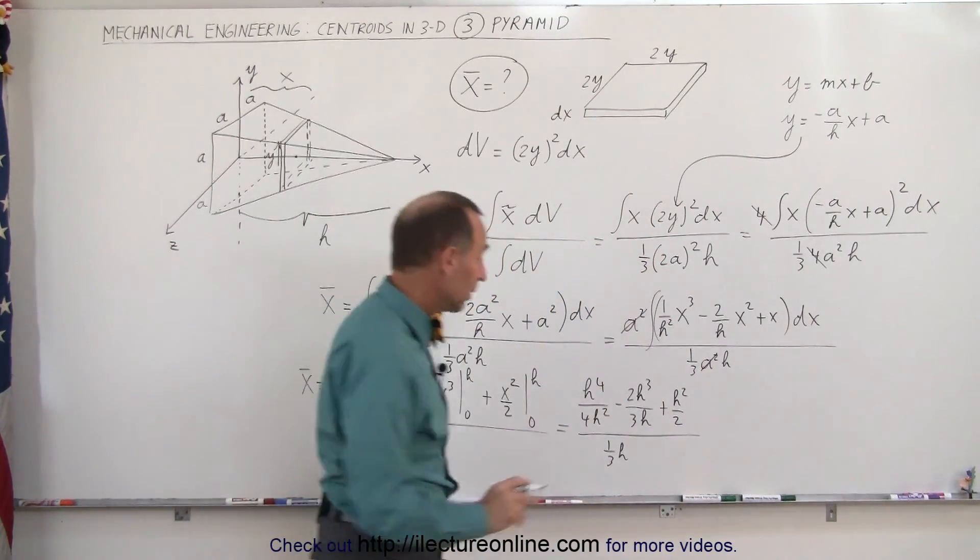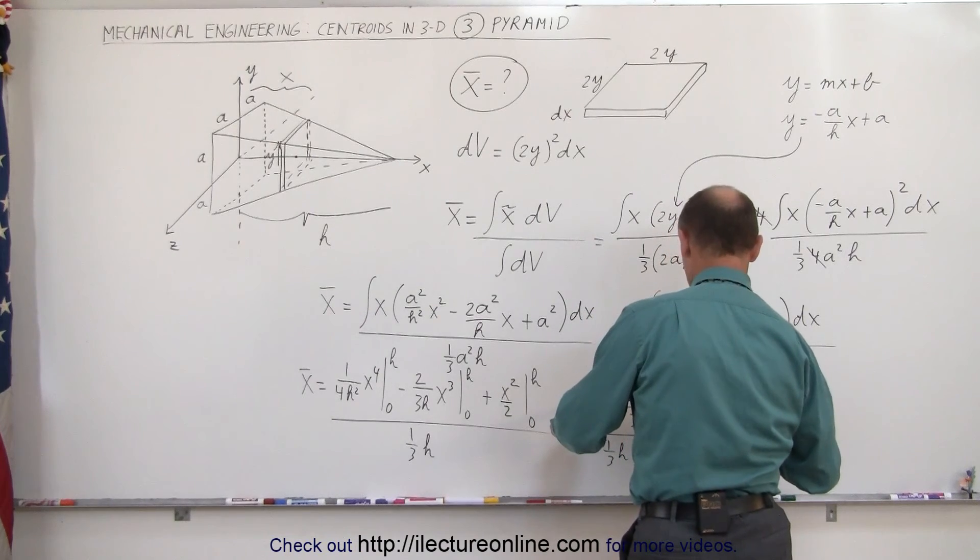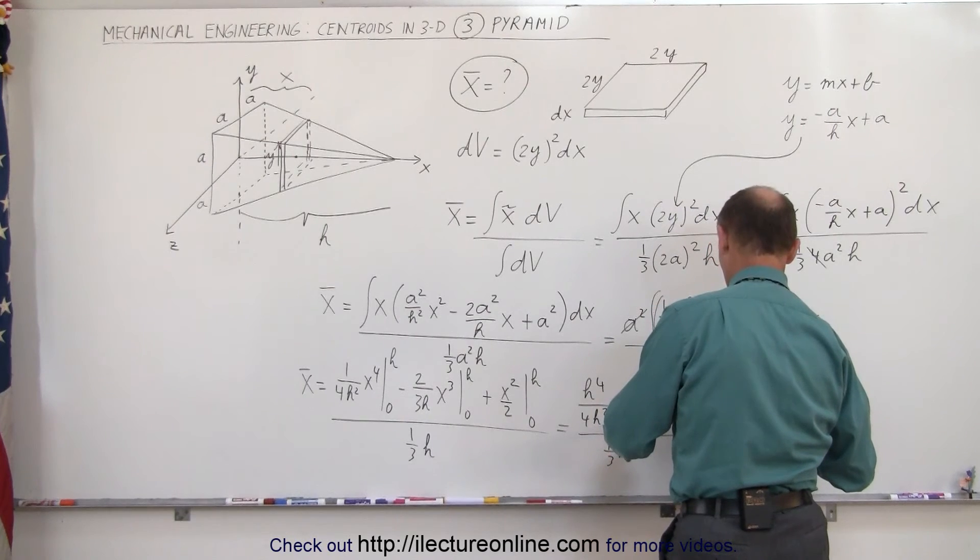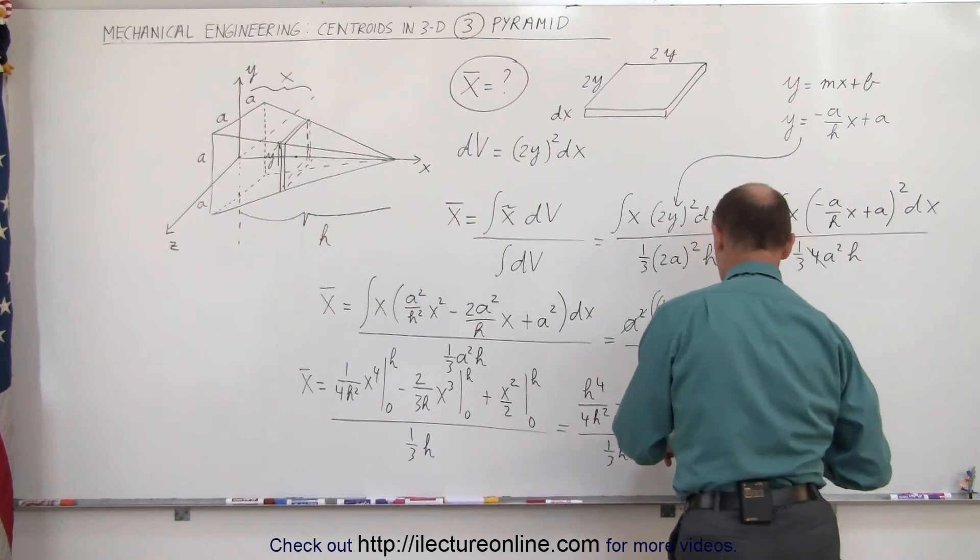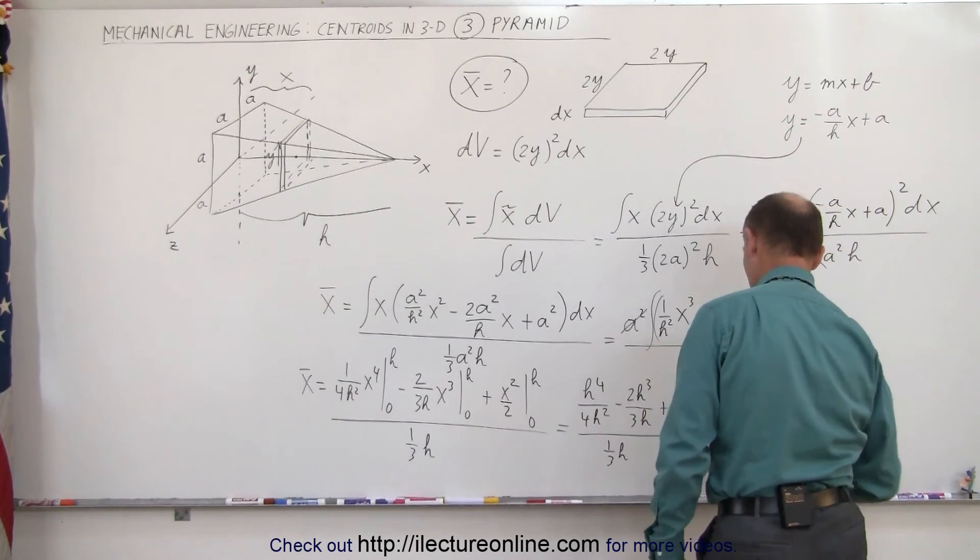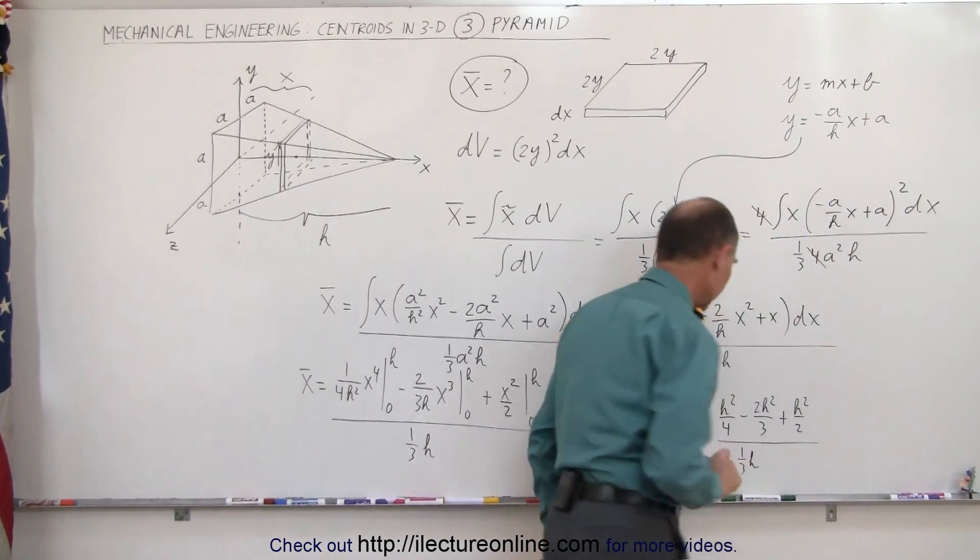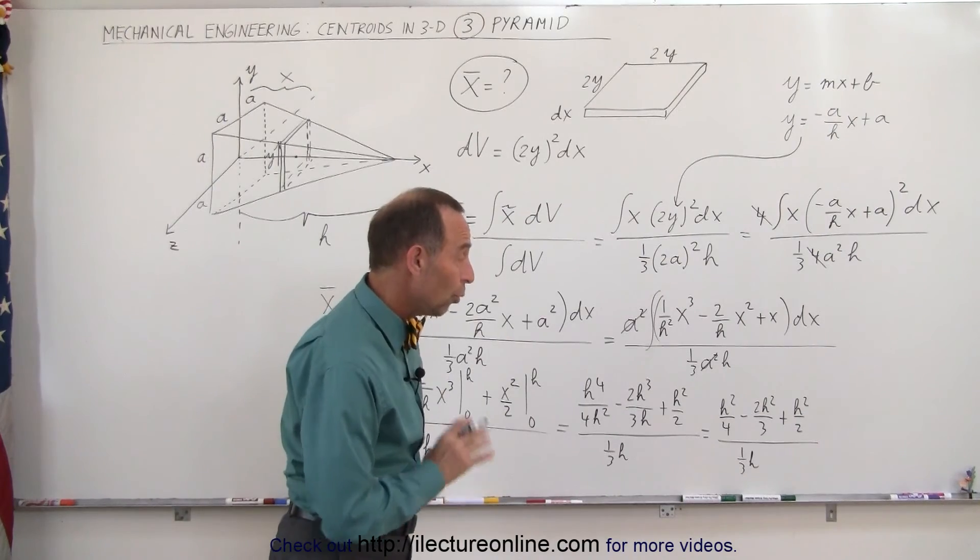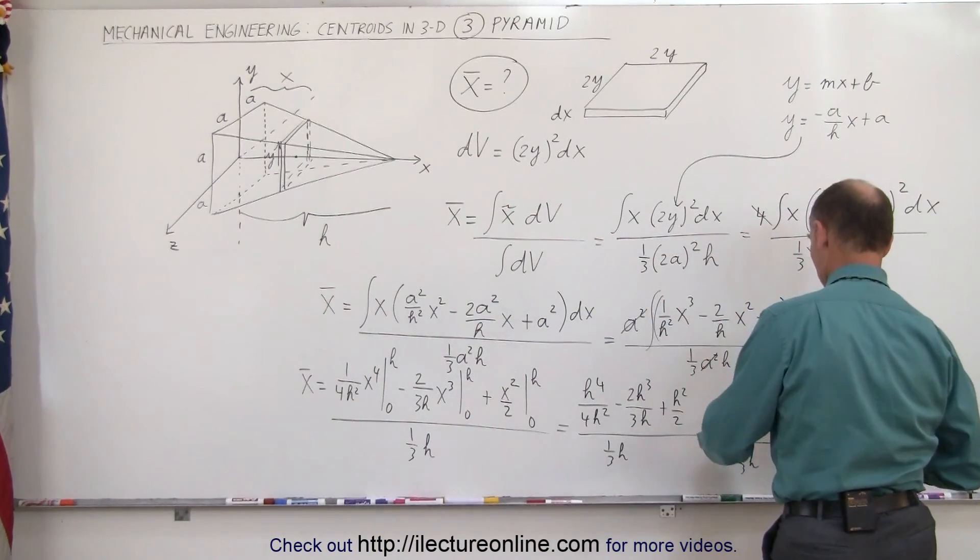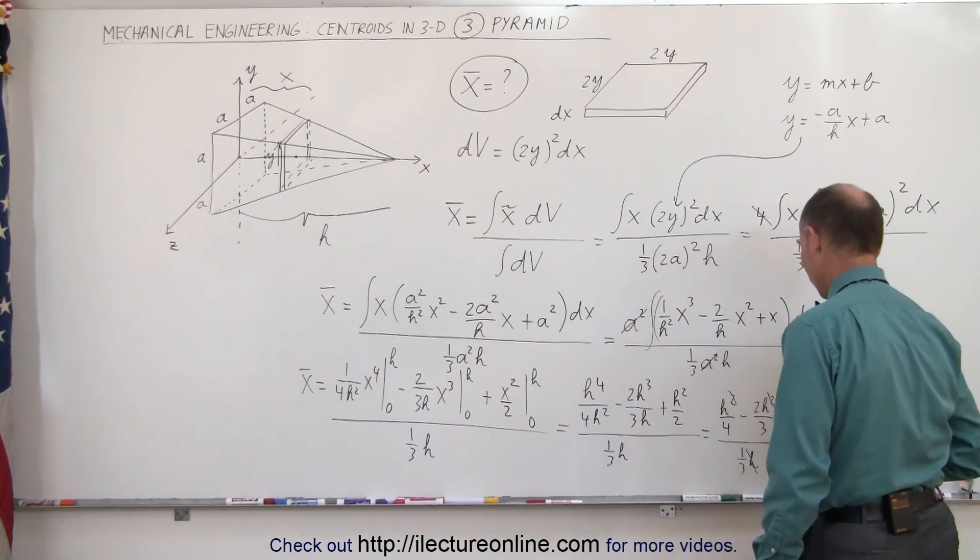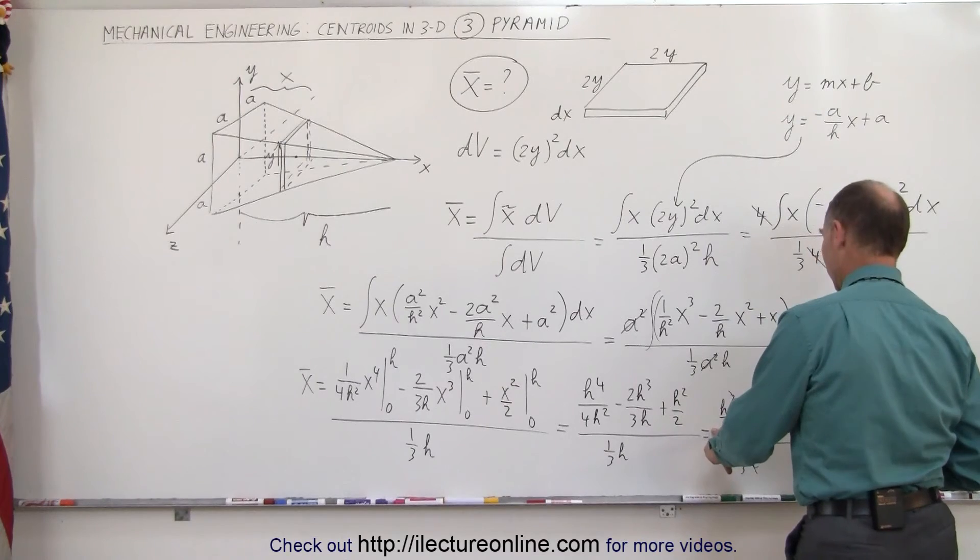Simplifying a little bit more, this is equal to h squared divided by 4 minus 2 h squared divided by 3, plus h squared divided by 2, the whole thing divided by one-third h. Common denominator in the numerator looks like that's going to be 12. We can already get rid of this h and each one of those h's, that makes it a little bit easier.